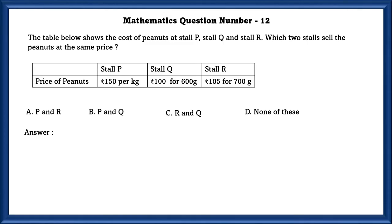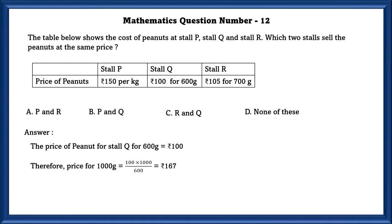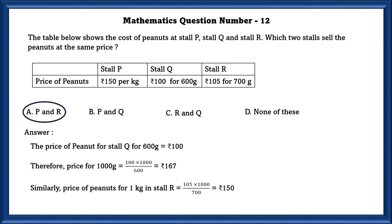Mathematics question number 12. The table shows the cost of peanuts at stall P, stall Q, and stall R. Which two stalls sell peanuts at the same price? Converting all to per kg: stall P is already in per kg. For stall Q, 600 grams costs 100 rupees, so 1 kg = 100 × 1,000/600 = 167 rupees per kg. Price for 1 kg at stall R is 150 rupees. So stalls P and R have the same price per kg.